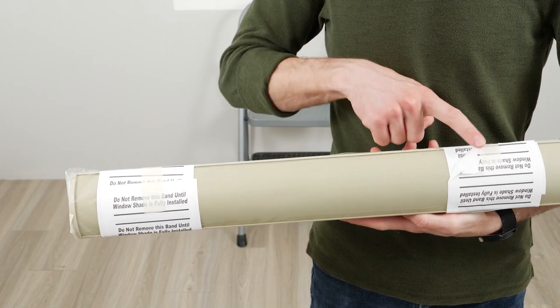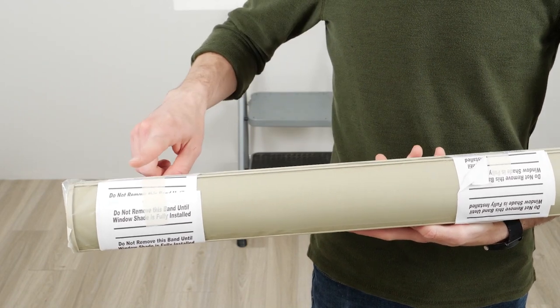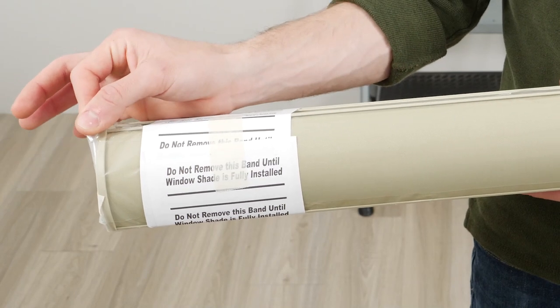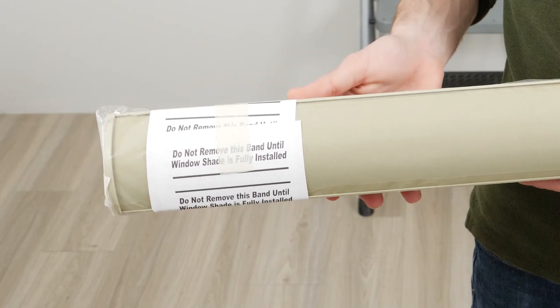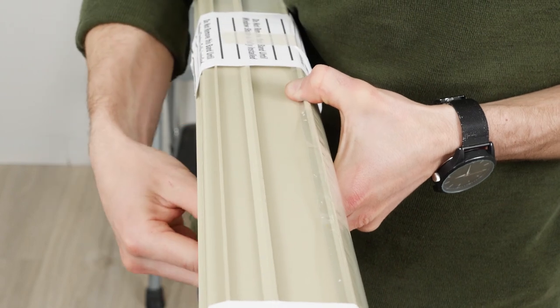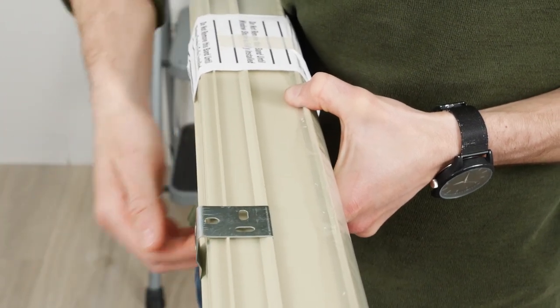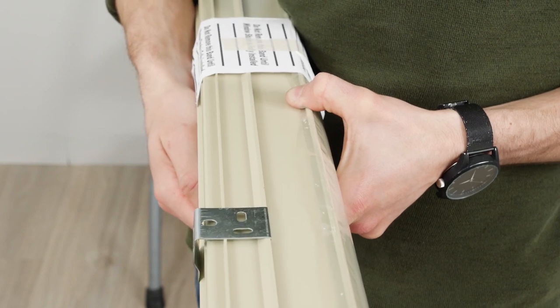If your shade came with these paper bands wrapped around it, leave them in place until the shade is installed. The same rule applies for the protective film covering the cassette. See these grooves on the top of the cassette? That's what the brackets latch onto to hold the shade in place. Refer to your installation manual if yours looks a little different.